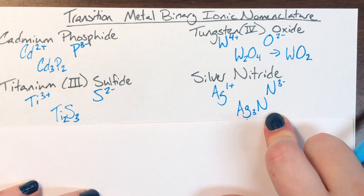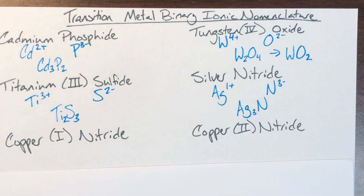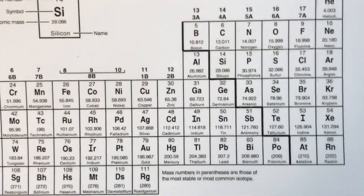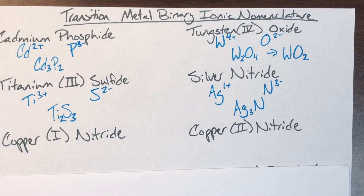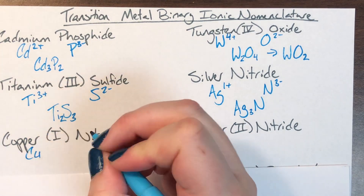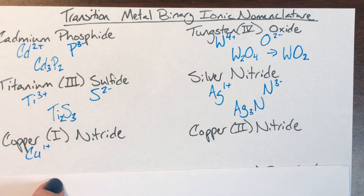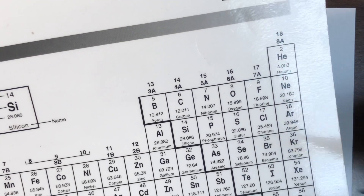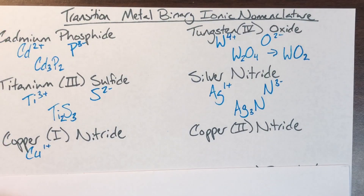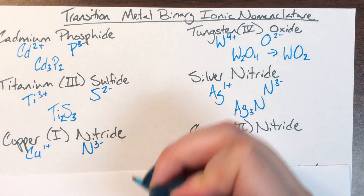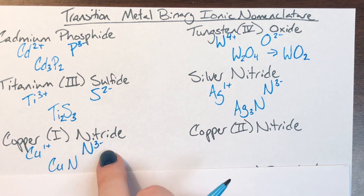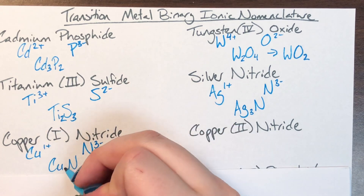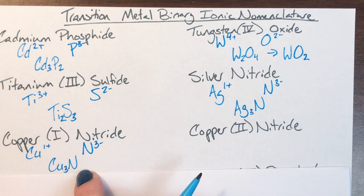Silver's charge of 1 becomes nitrogen's subscript, which I don't need to write. Copper 1 nitride: copper is element number 29, symbol Cu. Copper 1 means I have a charge of plus 1. Nitride is secretly nitrogen. Nitrogen is in column 5, meaning 5 valence electrons, so I steal 3 to get to 8. Smooshing them together: copper gets a subscript of 3 from nitrogen. Nitrogen gets the 1 from copper, which I will not write. So copper 1 nitride is Cu₃N.